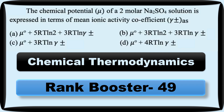What has been asked in the question? Chemical potential. The chemical potential of a 2-molar Na₂SO₄ solution is expressed in terms of mean ionic activity coefficient. Here, you have basically combined two concepts together in one question. You will check the formula of chemical potential, then concentration, pressure, and do you have an idea about activity and the activity coefficient of an electrolyte or solution? These are all things being checked in one question.